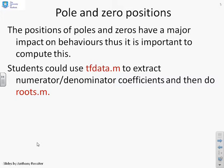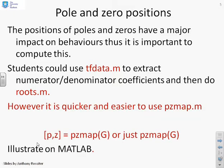Students could use TF data to extract the numerator denominator coefficients and then do roots on each of those in turn. However, there is a quicker and more efficient way of doing it. And that's to use this command here, which is pzmap, which stands for pole zero map.